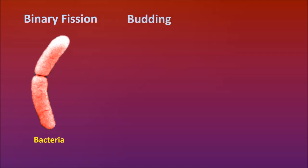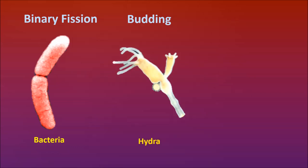Budding: In budding, the organism gives out a bud which further develops into a new organism and is separated from the parent organism, developing into an independent individual. The best example for budding is hydra.